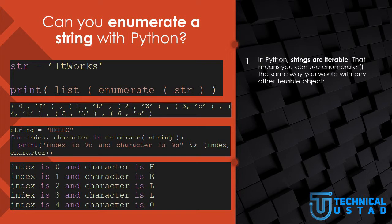In Python, strings are iterable. That means you can use Enumerate the same way you would with any other iterable object. In this example, we have a string called str with the value 'it works', and then we print the Enumerate object using a list. The result shows the index and then each letter individually in a tuple. Every character from the string is considered a value and given an index. When we call the print function, each character is displayed by itself.